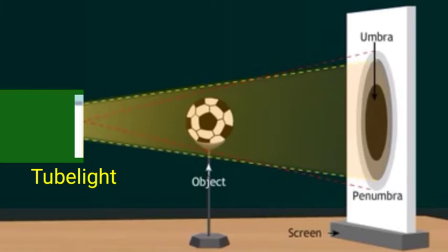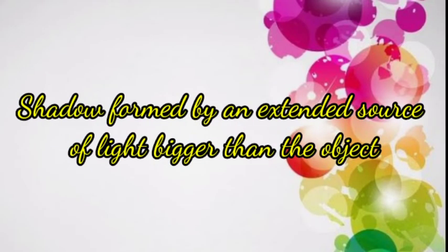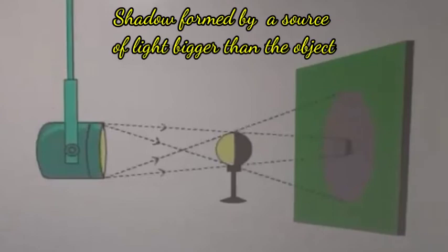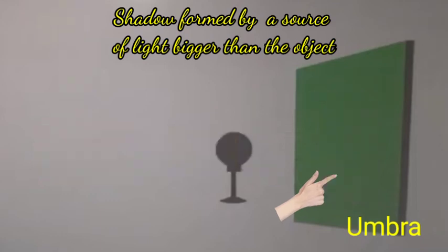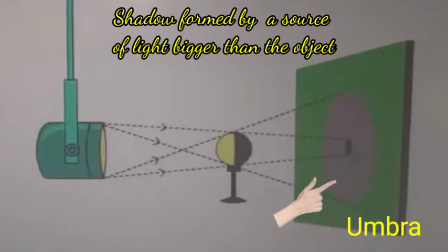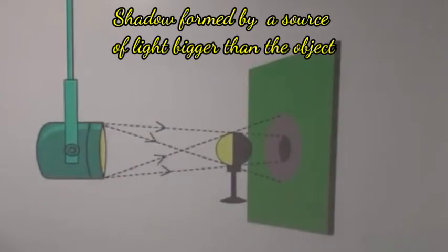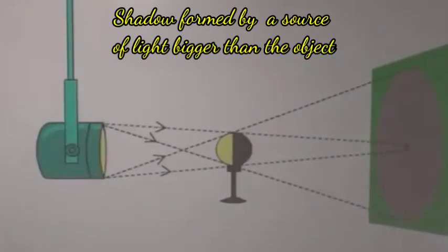Third, shadow formed by an extended source of light bigger than the object. When the object is smaller in size than the source of light, the shadow on the screen has one dark patch, umbra, surrounded by a partially dark patch, penumbra. The size of umbra is very small. If the screen is moved away from the object, the umbra disappears.